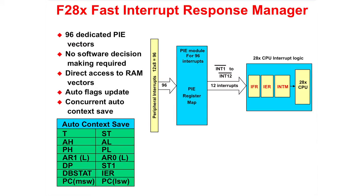The boot ROM and boot ROM vectors are located at the bottom of the memory map. The F28X devices feature a very fast interrupt response manager using the PIE block. This allows up to 96 possible interrupt vectors to be processed by the CPU. We will cover more details about this in the Reset, Interrupts, and System Initialization module.